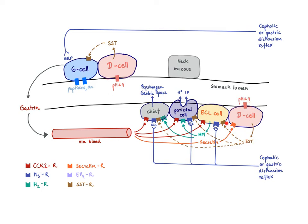Somatostatin then acts on its receptors, which are found on essentially any of the cells in the stomach — on the ECL cells to decrease histamine release, on the parietal cell to directly inhibit acid secretion, on the chief cell, and also on the G cell to directly decrease gastrin production.